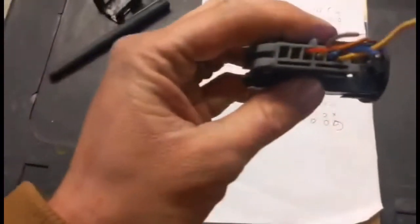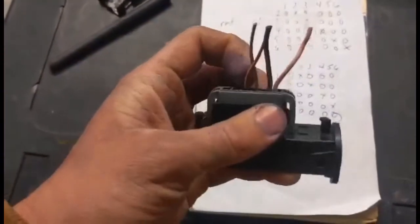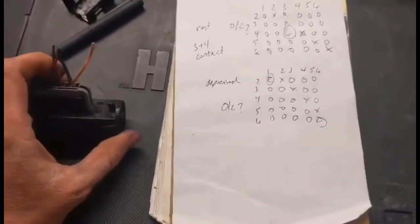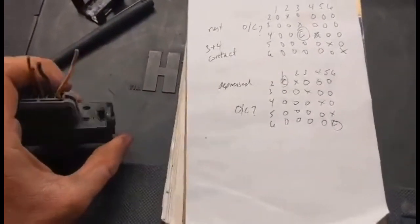Now on this harness, five and six are unused. I don't know if that's the same with all the trucks, but on this one, five and six are unused. So basically what that tells me is you've got what's being used as a two pole, normally open, normally closed switch.